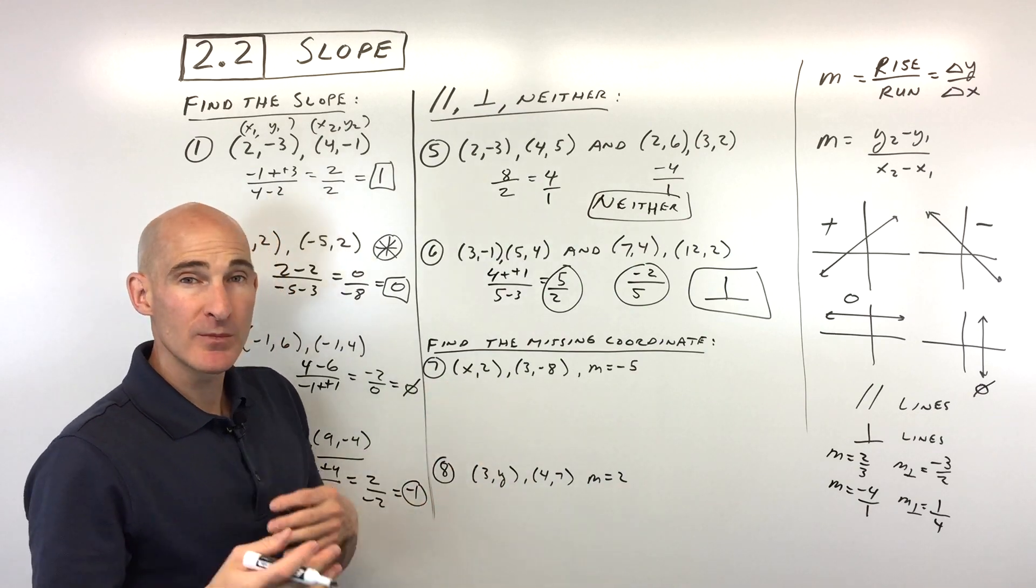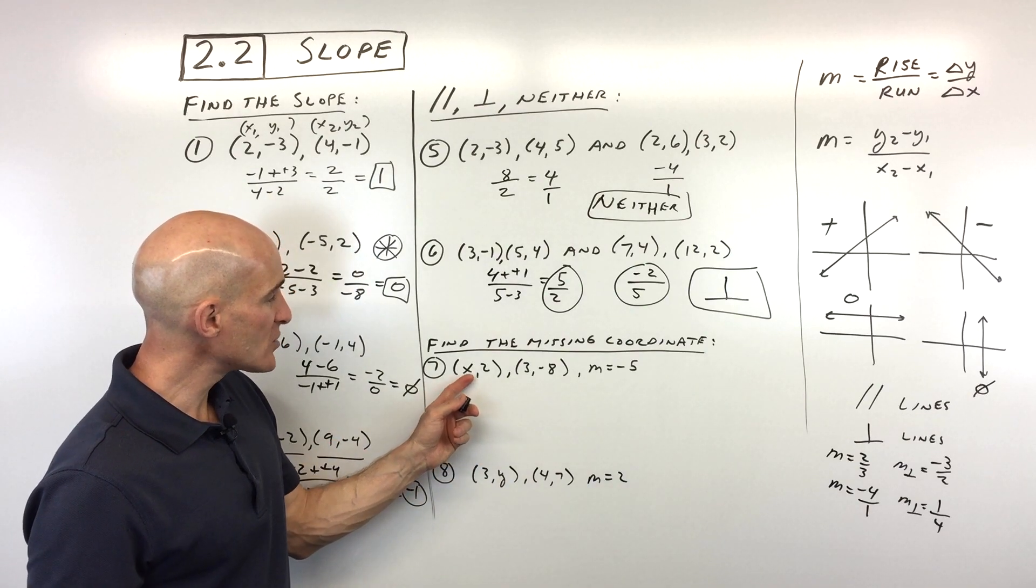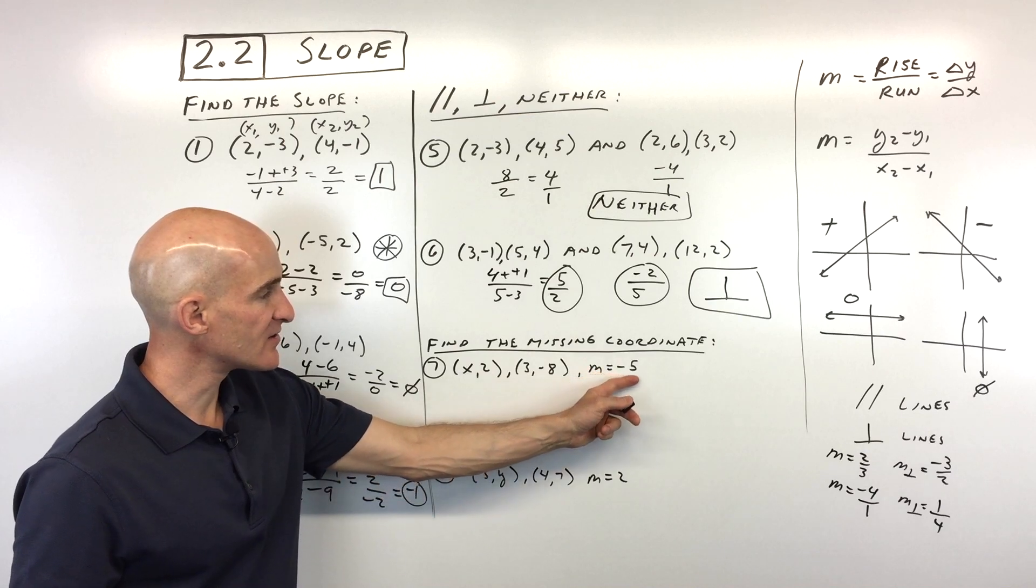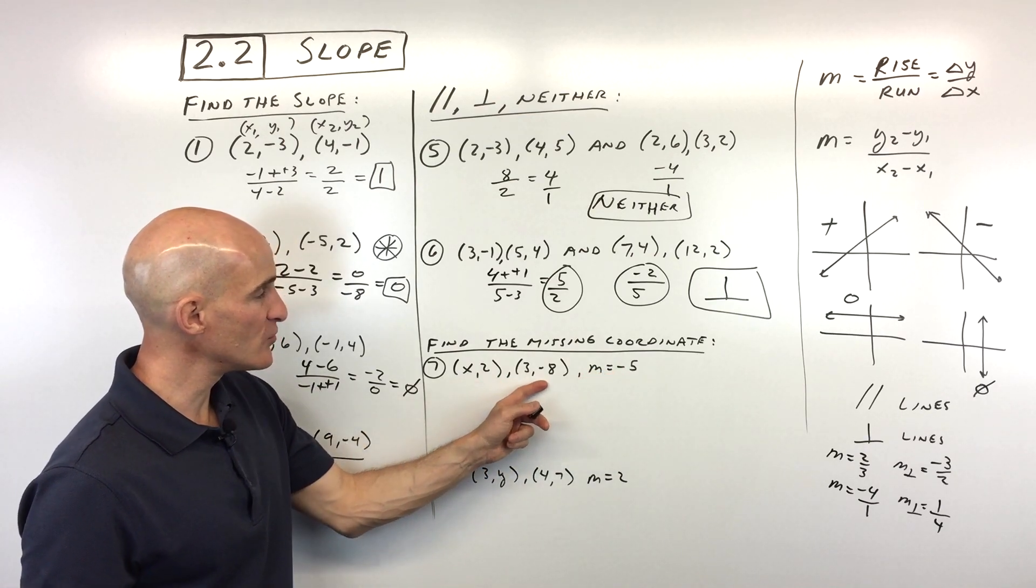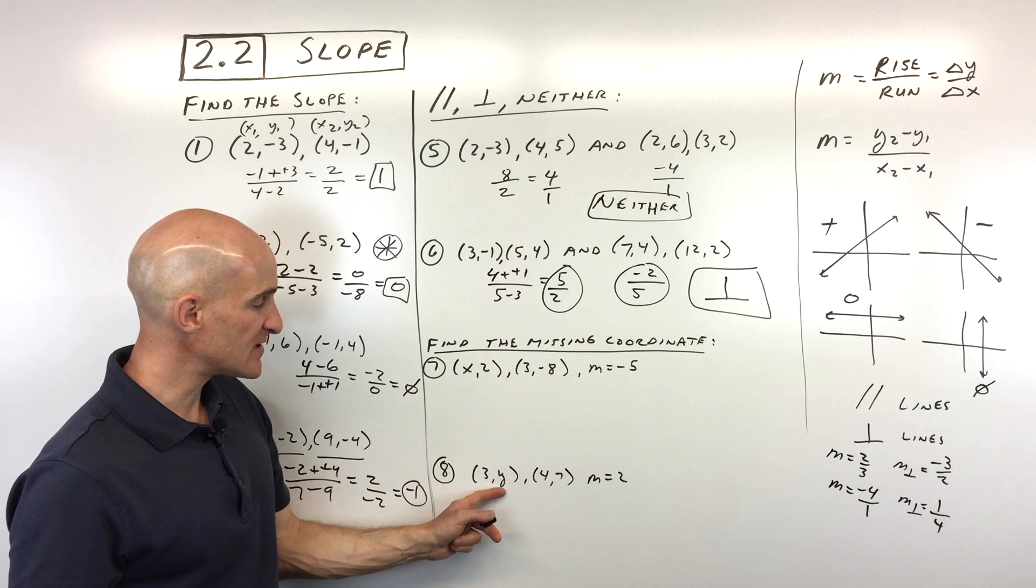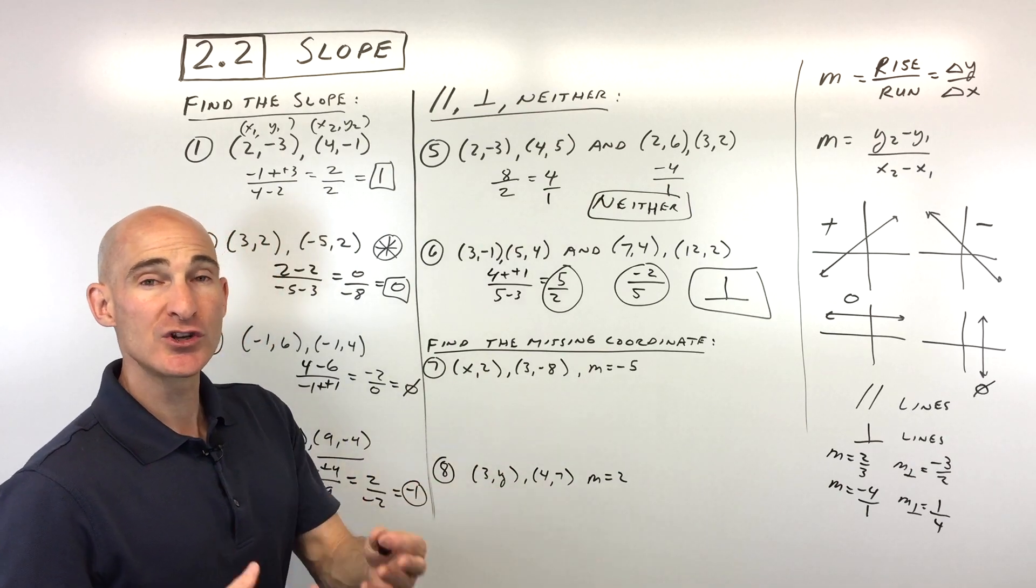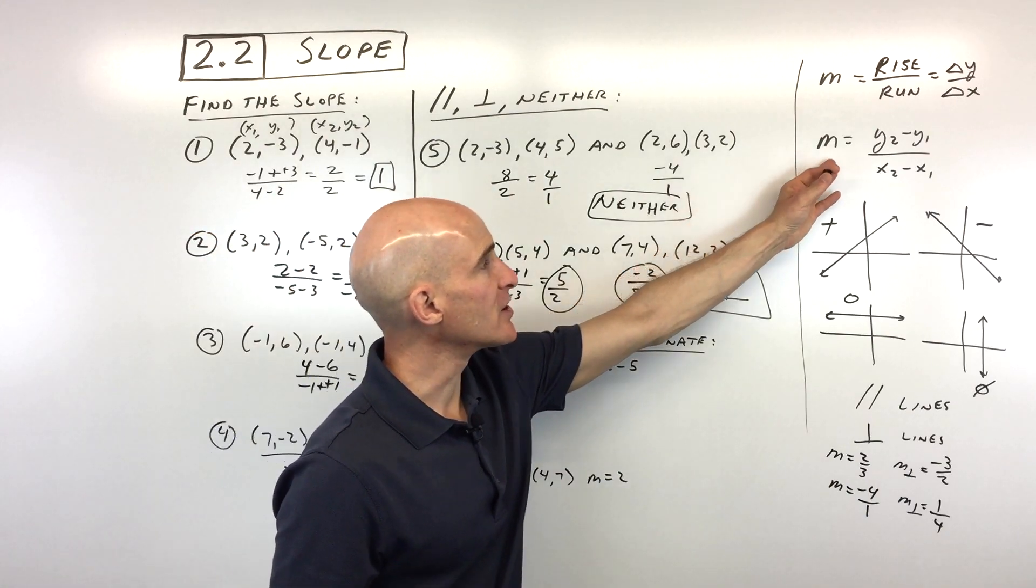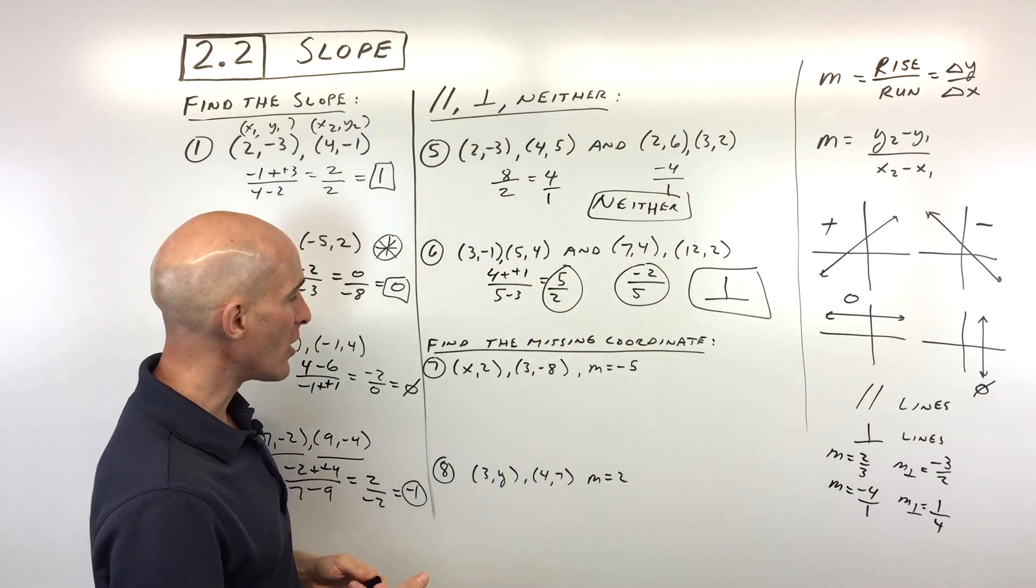Okay, now number 7 and number 8, these are a little bit more challenging. What we're doing here is we're trying to find out the missing coordinate. They tell us that the slope is -5 between these two points, but we want to find out that missing x value. Same thing for this one. We want to find the missing y value. Here the slope is 2. So we're going to do the same thing. We're going to use this formula here. It's just kind of like an algebra equation. We're just solving it.